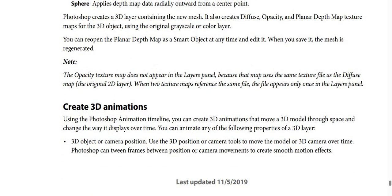The fourth option, Sphere, applies depth map data radially outward from a center point. Photoshop creates a 3D layer containing the new mesh and also creates diffuse, opacity, and planar depth map texture maps for the 3D object using the original grayscale or color layer. You can reopen the planar depth map as a Smart Object at any time, edit it, and when you save it the mesh is regenerated. Note: the opacity texture map doesn't appear in the Layers panel because it uses the same texture file as the diffuse map — when two texture maps reference the same file, the file appears only once in the Layers panel.